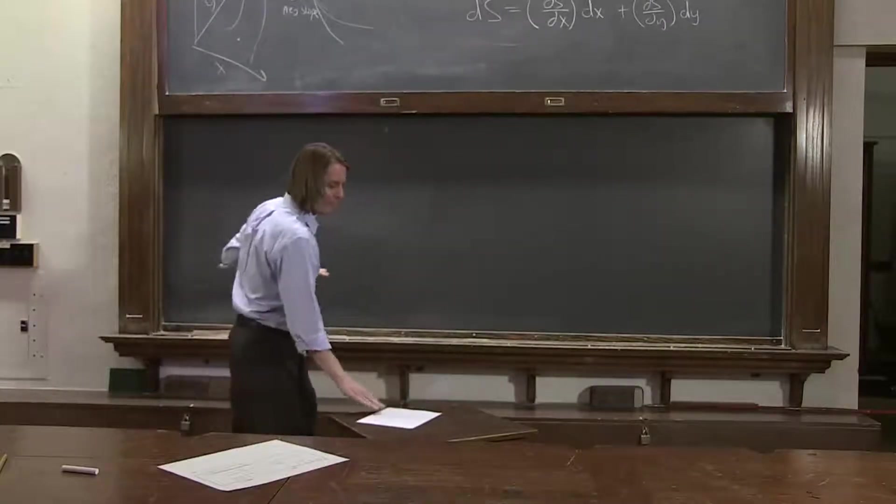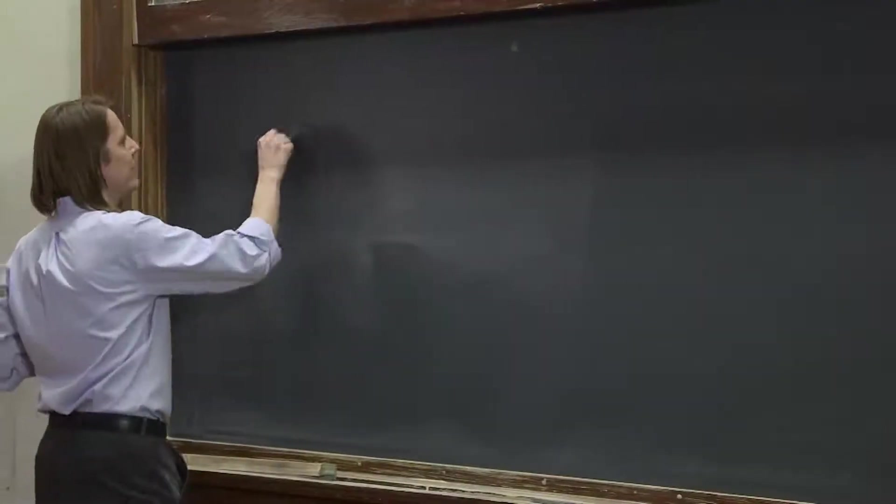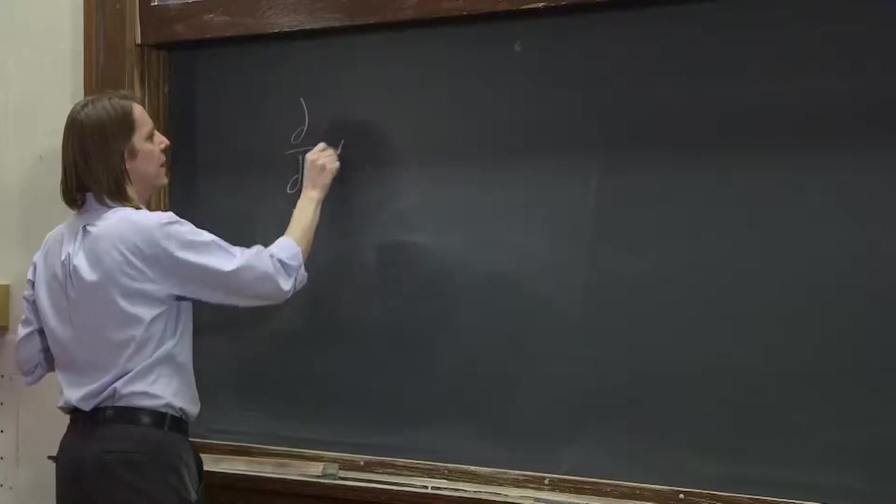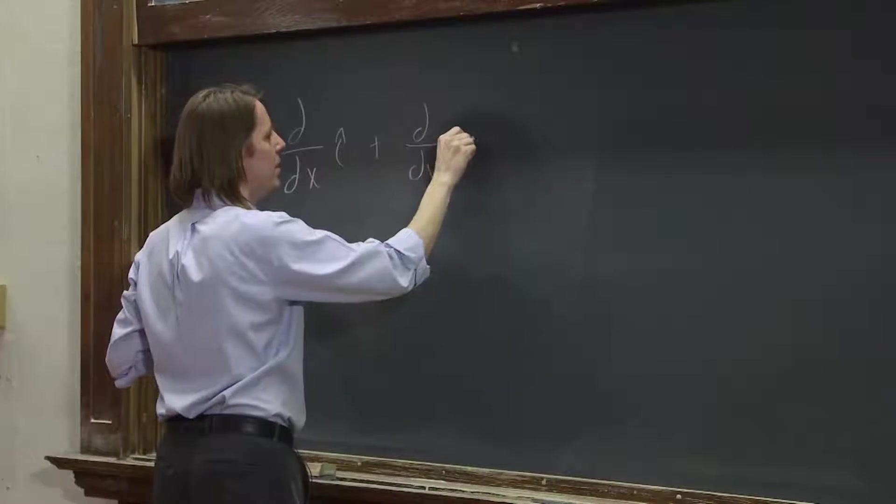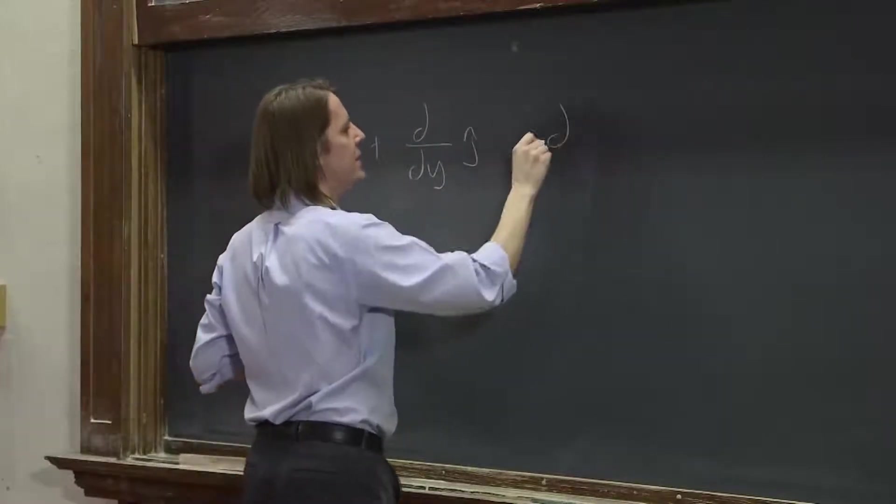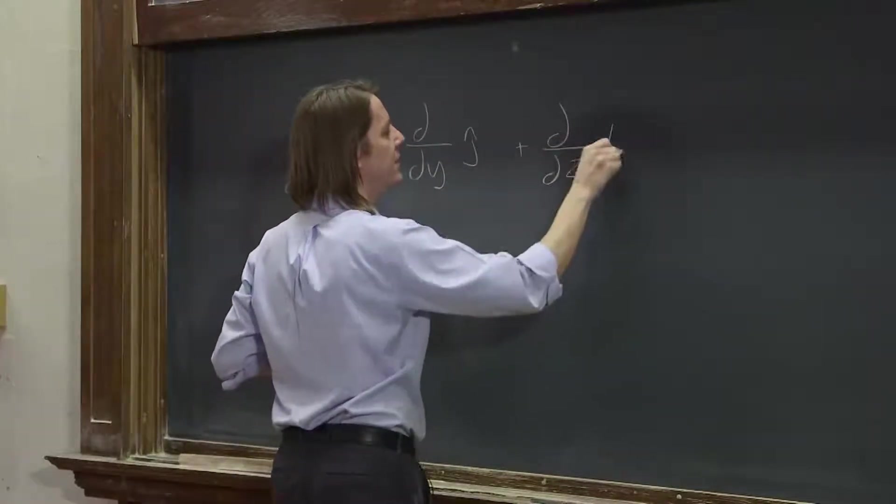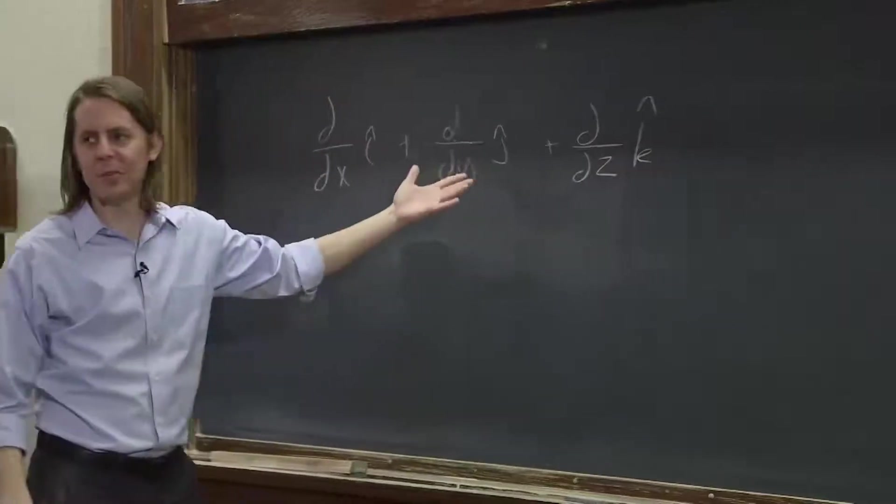What we could say is to find this, we need to use something that looks like this: d/dx i hat plus d/dy j hat plus d/dz k hat, if we had a three-dimensional function.